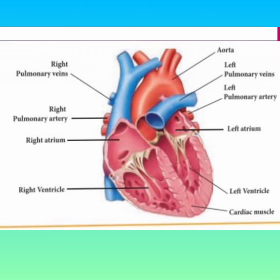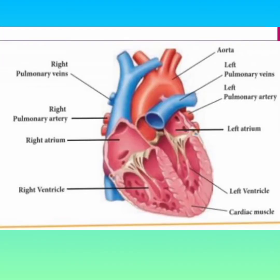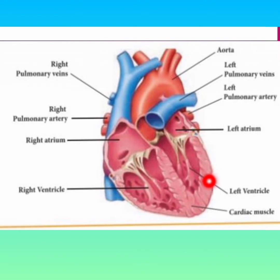The heart is filled with muscles, so this is called a hollow muscular organ. The heart is covered with a double layer called the pericardial membrane. In the pericardial membrane there is a fluid called pericardial fluid, which protects the heart from shock.